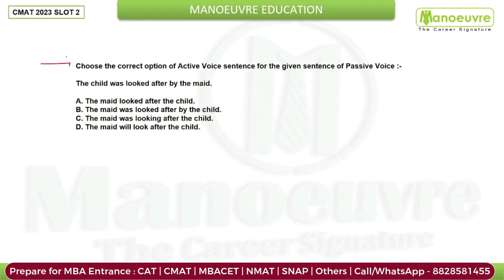The first question asks you to choose the correct option of active voice for the given passive voice sentence. Now, how do you know a sentence is in passive voice? Basically, wherever 'by' is used. If the sentence is in passive voice, the structure is the opposite of the active structure — the previously used structure is reversed.